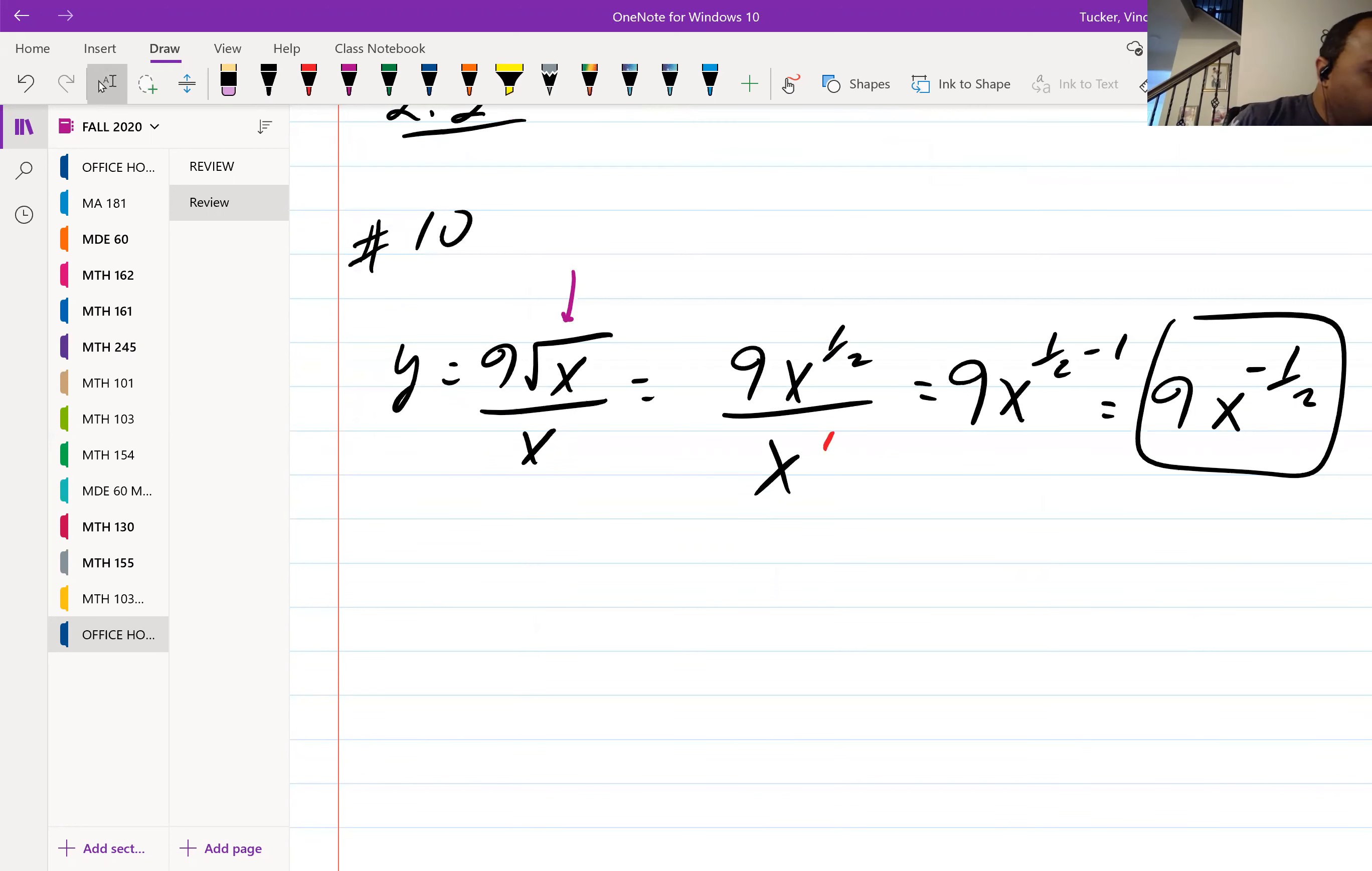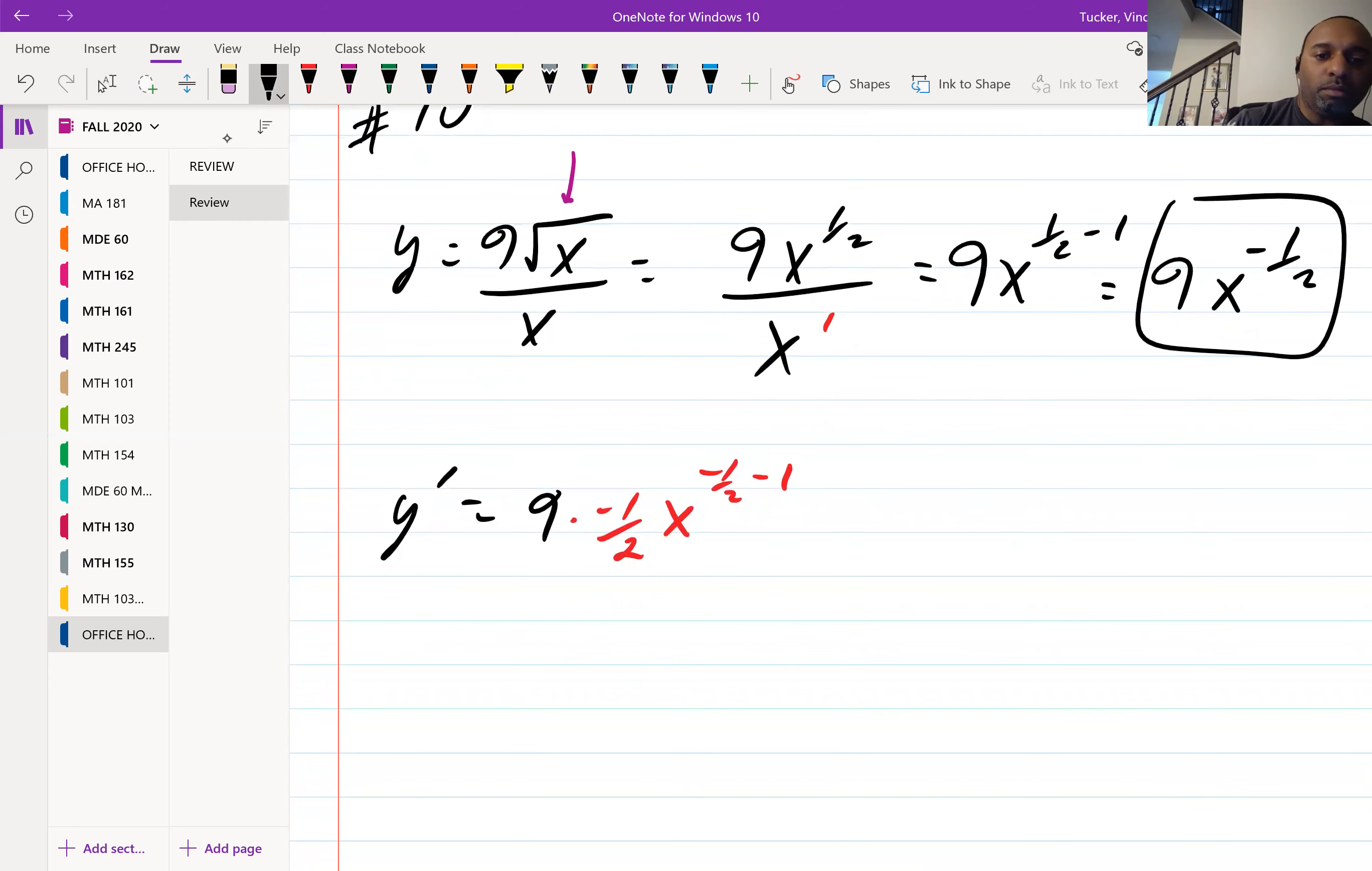In the second, they want us to differentiate. You have the 9 out front. So we bring this negative one-half to the front, so it would be times negative one-half, x to the negative one-half minus one. Multiplying the 9 times negative one-half is negative 9 over 2. And then negative one-half minus 1 is negative one-half minus 2 over 2, which is negative three-halves.